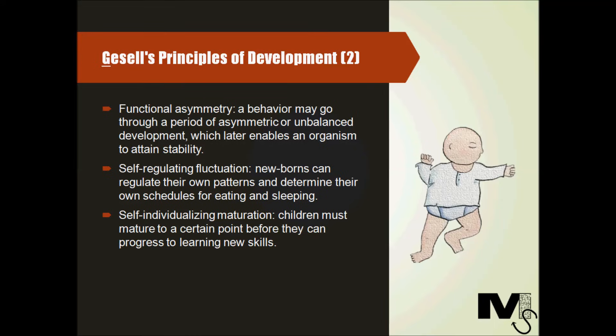The next principle is the principle of self-individualizing maturation. This states that children must mature to a certain point before they can progress to learning new skills. For example, a four-month-old cannot use language to communicate properly because the infant's brain has not matured enough to allow the child to talk. Maturation patterns are genetically programmed according to Gesell, but a child's environment and the learning that occurs as a result determines if a child will attain optimal development.